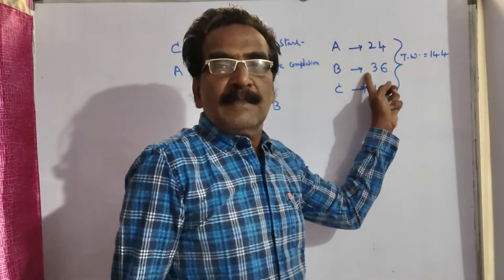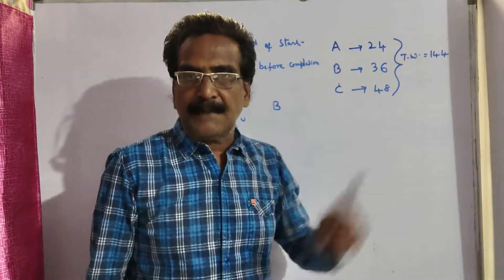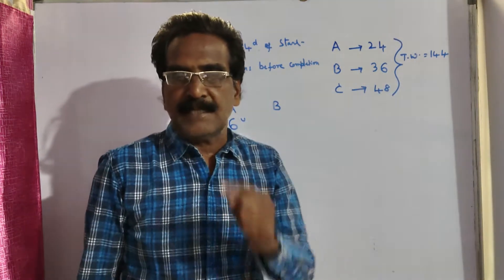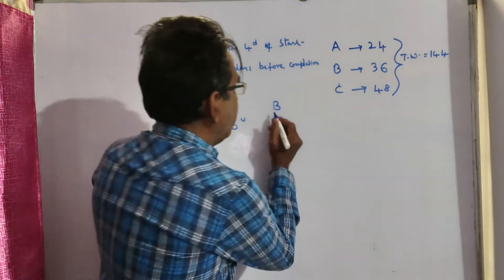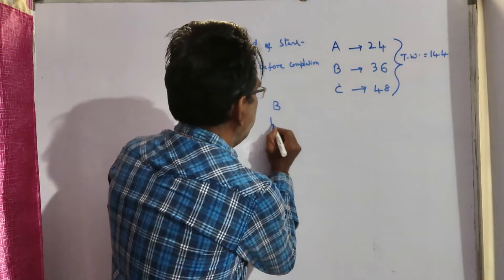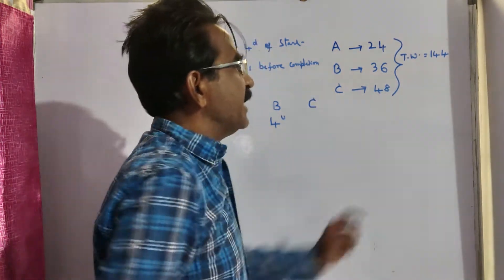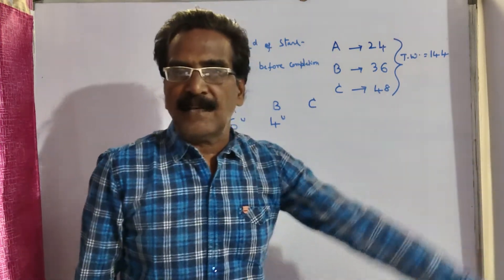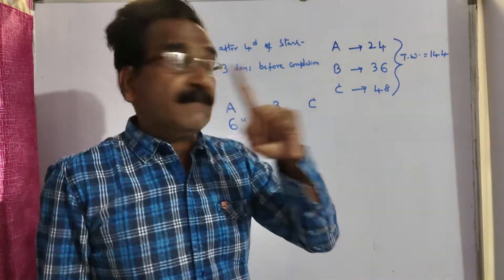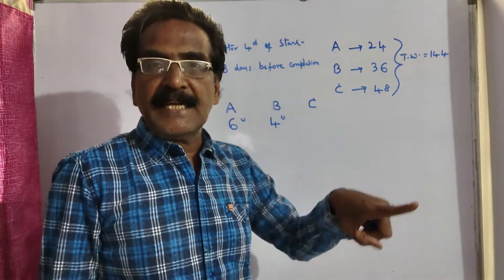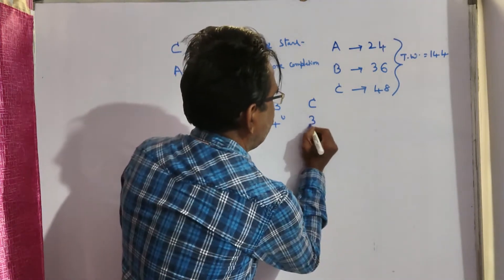B can complete this work in 36 days. So 144 divided by 36 means B can do 4 units of work per day. Whereas C can complete this work in 48 days, so C can do 3 units of work per day.